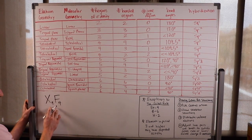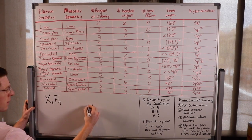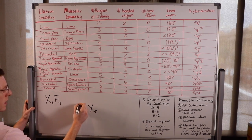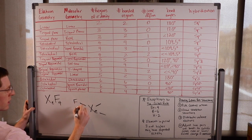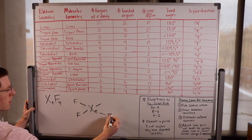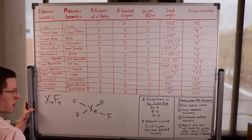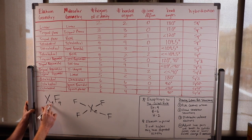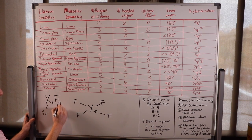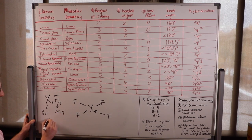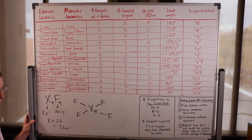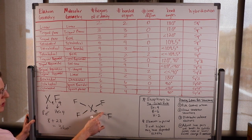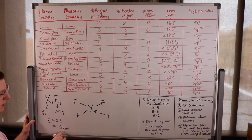The last shape is xenon tetrafluoride, XeF4. The central atom is xenon and I'll draw in my four outer fluorine atoms. Xenon contributes eight electrons — it's a noble gas with eight electrons in its outer shell. Fluorines contribute seven each, so eight plus 28 gives 36 electrons total. We've already used eight for four bonds, so we have 28 left.